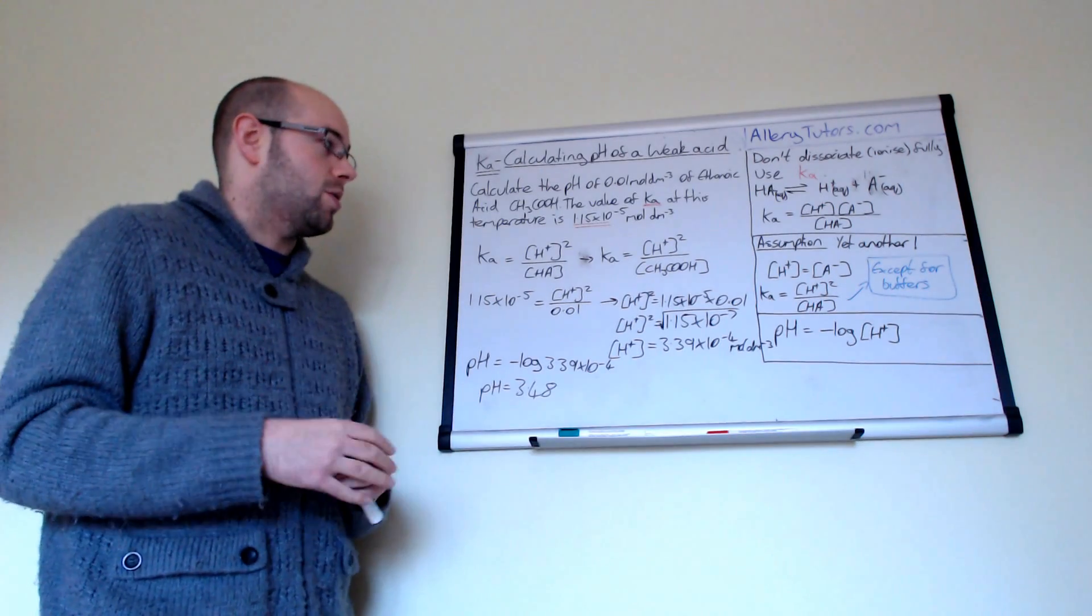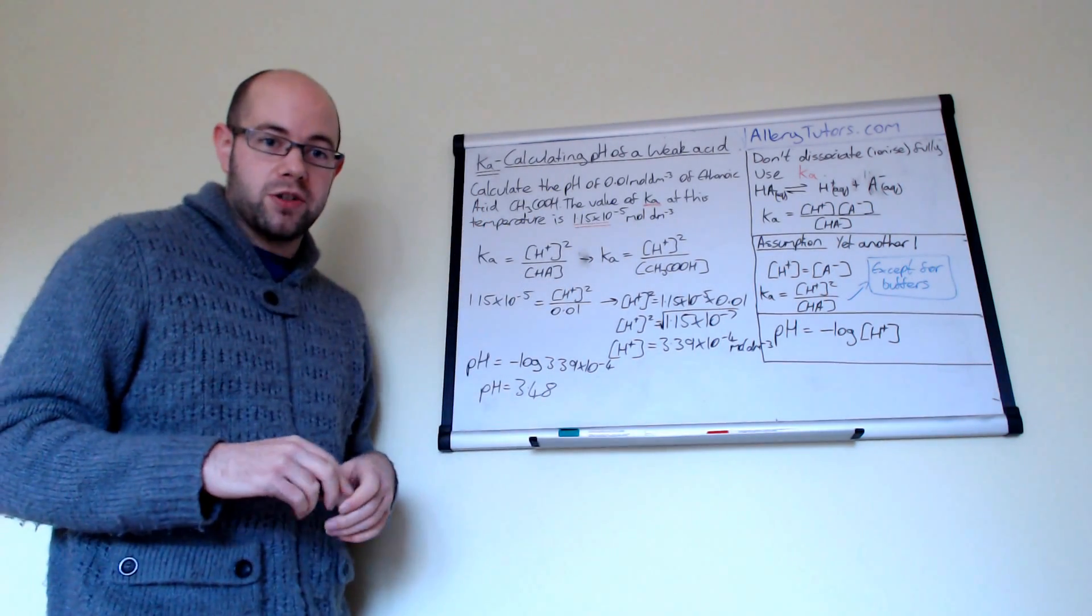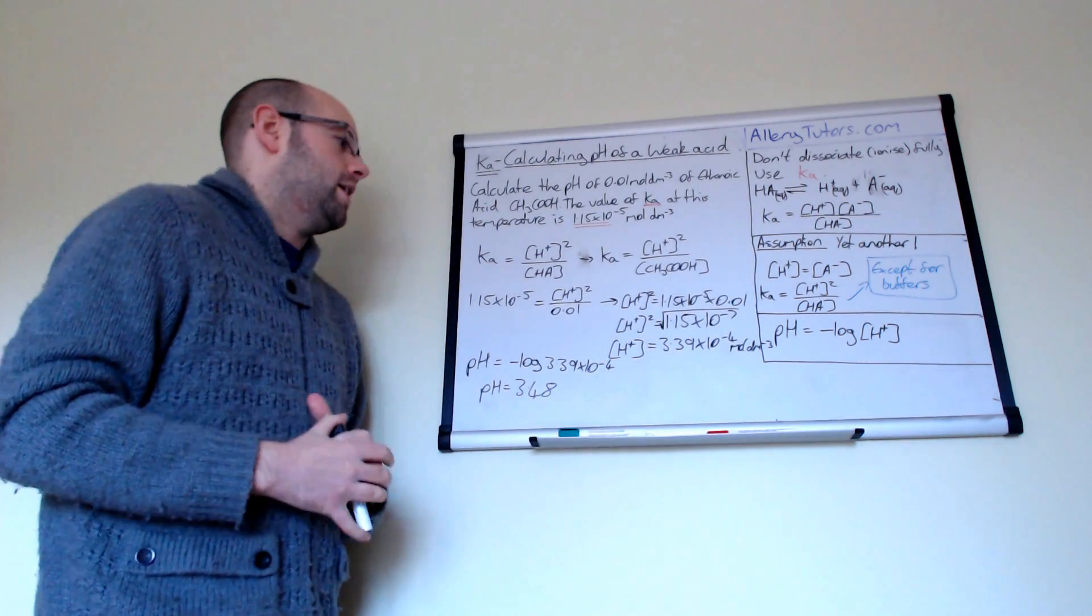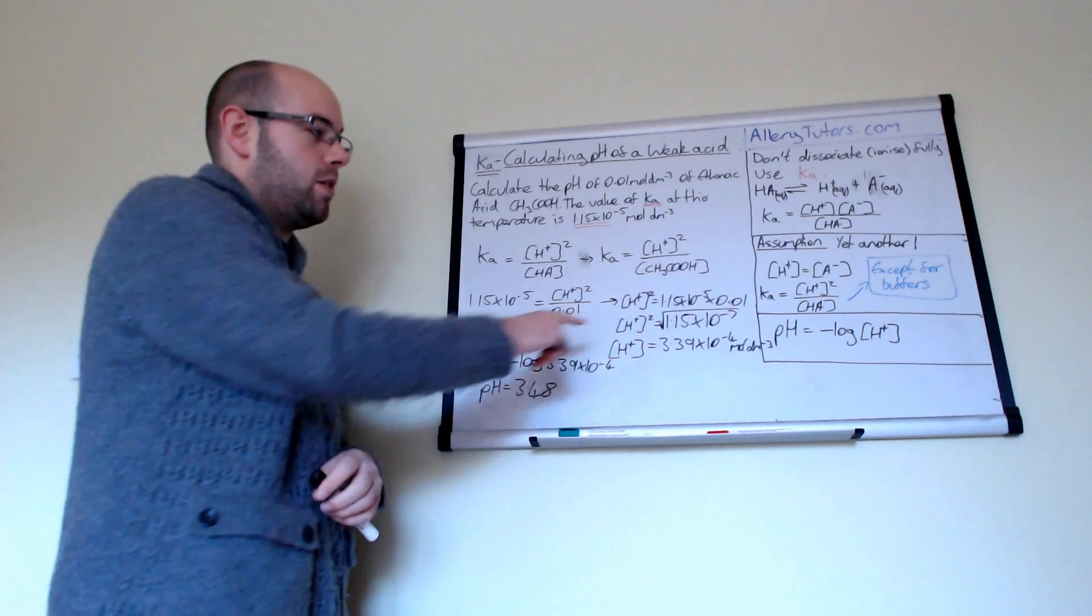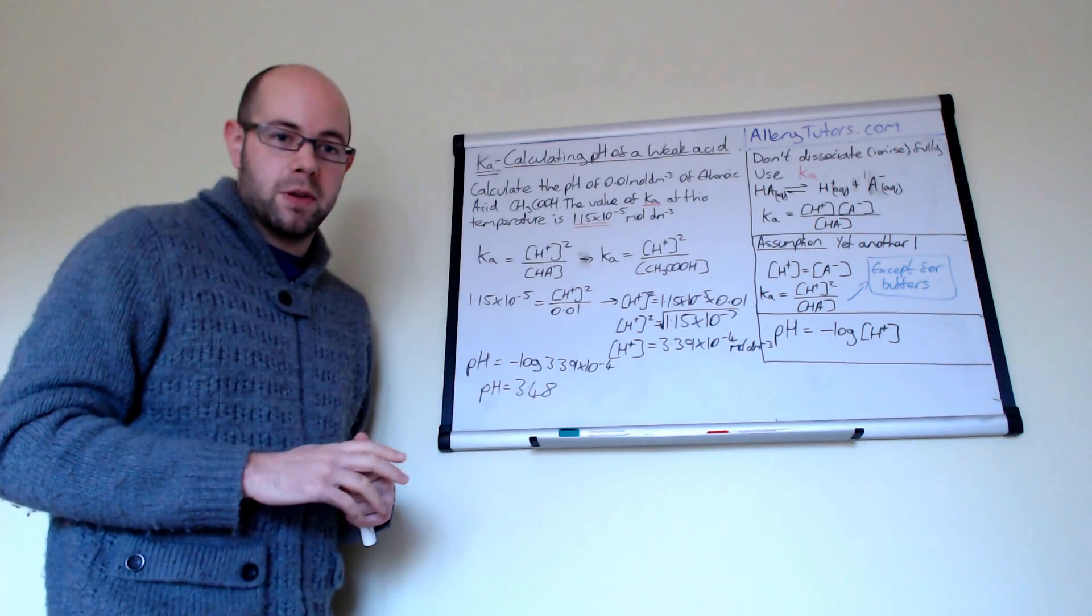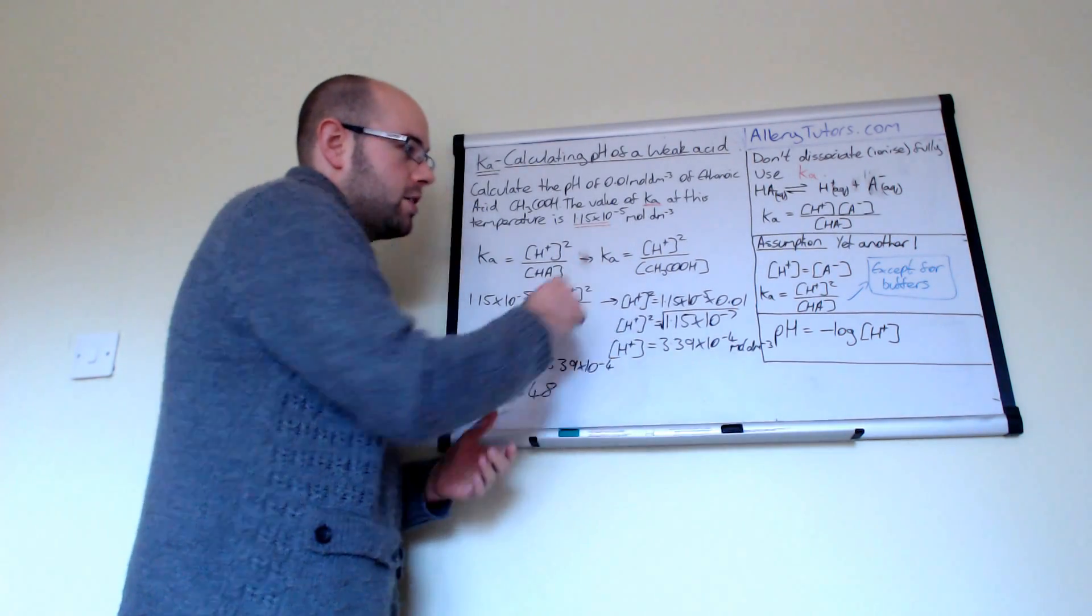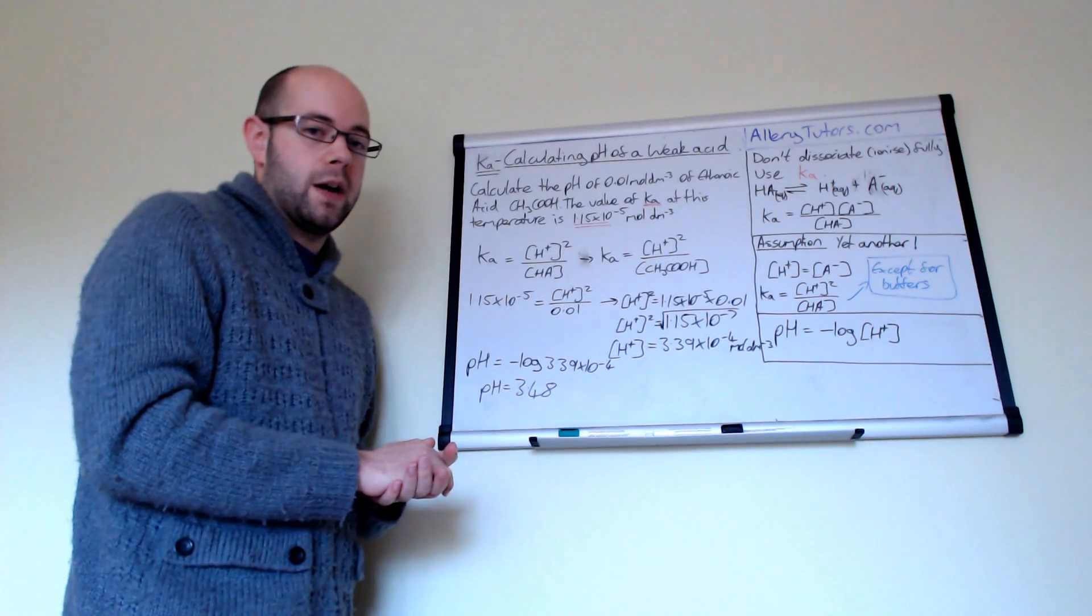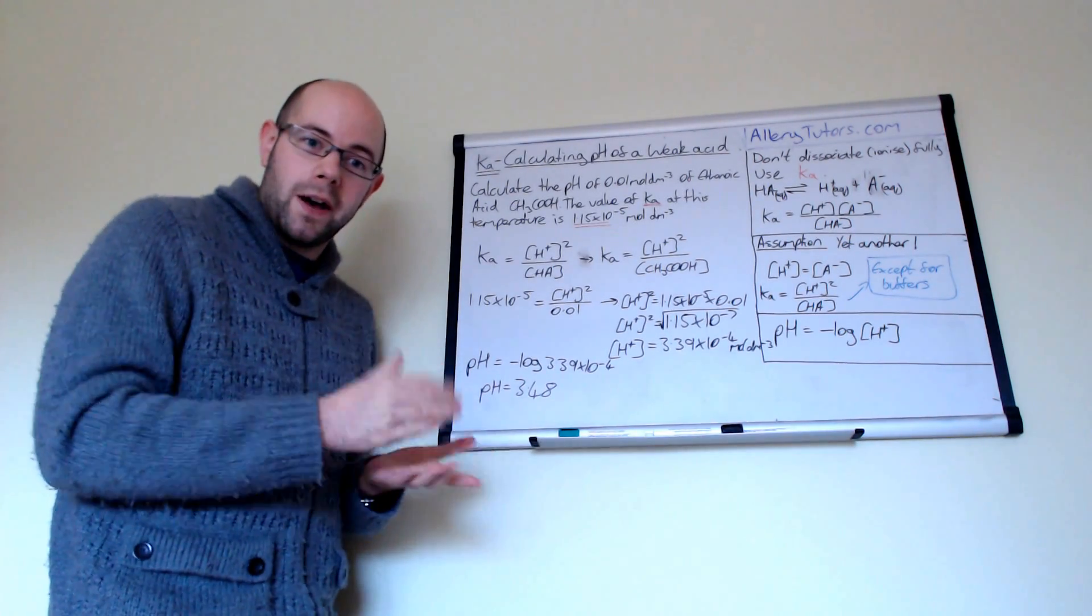And you can see just in summary, the first thing you need to do is work out your Ka expression, take into account the assumption which is H plus squared, rearrange it, square root your answer, put your answer H plus into your pH equation, and there's your number there. It's really straightforward. Just make sure that you take into account that assumption, and you understand why we have that assumption as well. They might ask it in the exam. But that's it. I hope that helps. Bye.